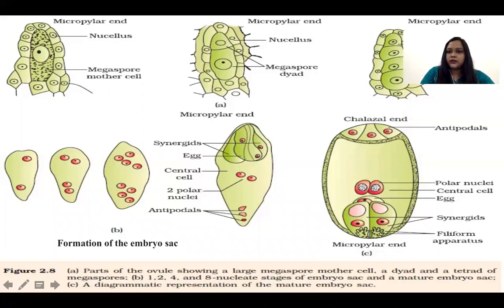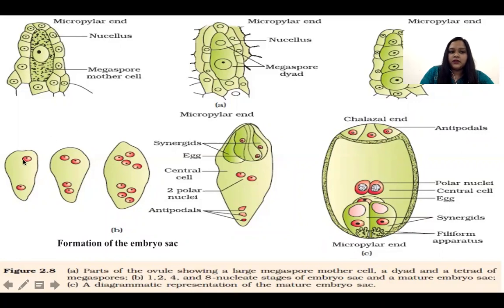After that, the female gametophyte is going to be produced. Three cells degenerate and only one cell will go for maturation. In that also, there are 2-cell, 4-cell, and 8-cell conditions, and after that the mature embryo sac is produced. In the 8-cell condition, 3 cells are at the antipodal end, 2 are the polar nuclei, 2 are synergid cells, and the egg cell.